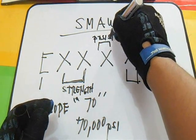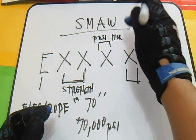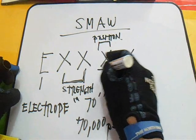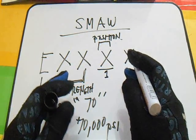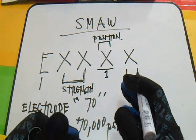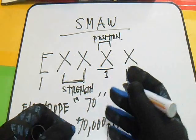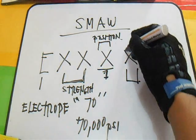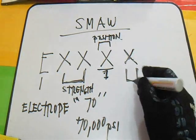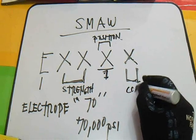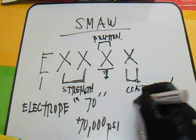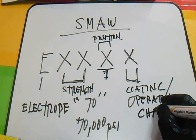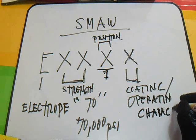The next X represents the position. Number one indicates the electrode is suitable for any position. We also have positions two, three, and four. The last X represents the coating operating characteristic.